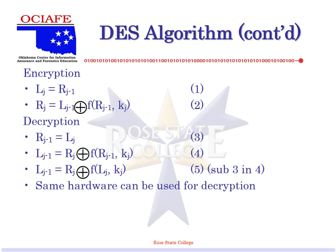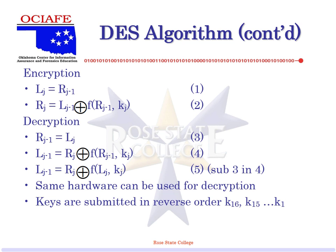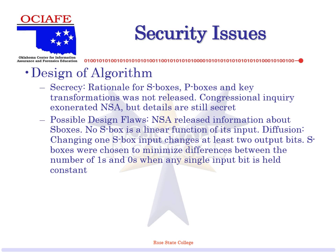Some security issues — you need to know the weaknesses of DES. Secrecy: the rationale behind the S-boxes, P-boxes, and so on was not released; Congress inquiry exonerated the NSA but we still don't know why they did it. Possible design flaws: the NSA released information about the S-boxes — S-boxes alone are a function of their input. Changing one S-box changes at least two outputs. S-boxes were chosen to minimize differences between the numbers of ones and zeros when a single input is used.